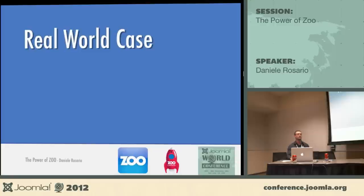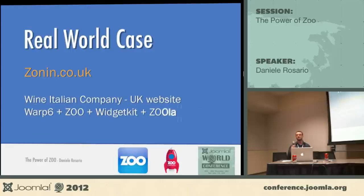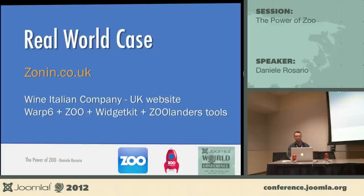Here's an example of what you can build with Zoo. This is a website we built as a web agency using entirely YOOtheme tools: Warp 6 as the template engine, Zoo as the main component, WidgetKit for slideshows and image galleries, and our Zoolanders tools for an expanded version of Zoo elements.